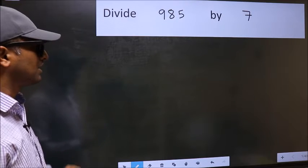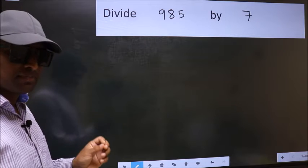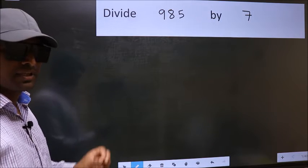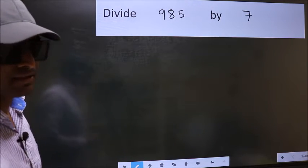Divide 9.85 by 7. While doing this division, many make this mistake. What is the mistake that they do? I will let you know, but before that, we should frame it in this way.